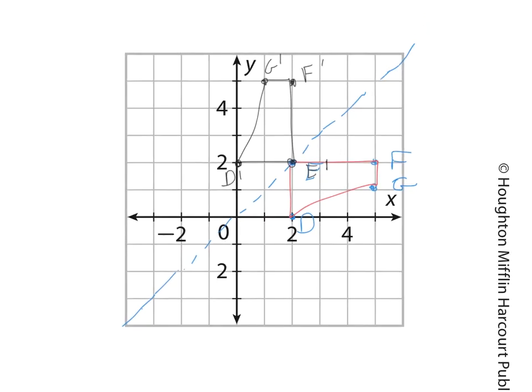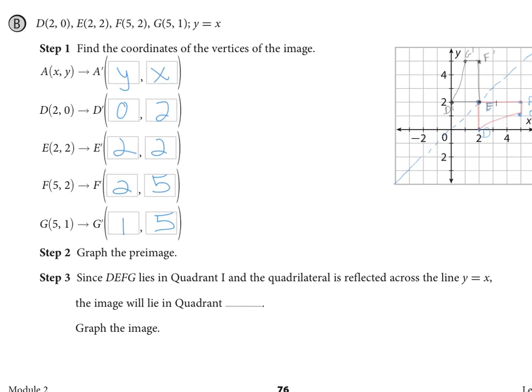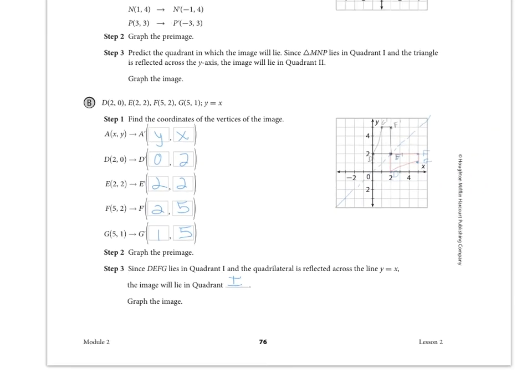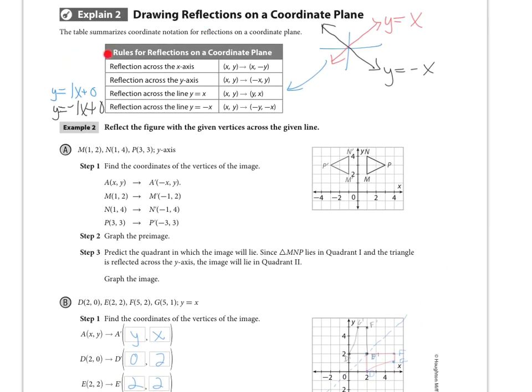Returning to our fill-ins, it says step 3, since DEFG lies in quadrant 1, and the quadrilateral is reflected across the line y equals x, the image will lie in what quadrant? The black figure you can see is also still in quadrant 1. And of course, we've graphed them already. So that's how we're going to reflect things across a coordinate plane. You just want to go back to these rules at the top of the page and maybe even start to memorize them so that you have them kind of on the tip of your tongue when it comes to reflections.